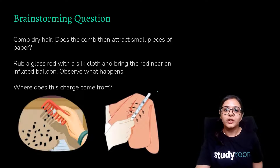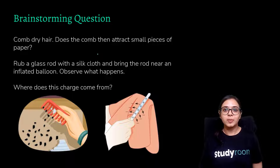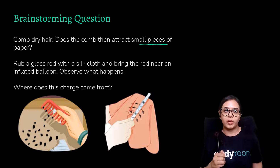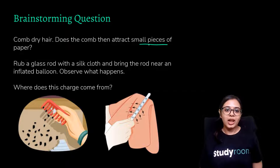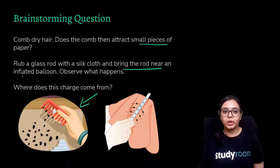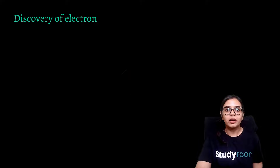Here is a brainstorming activity: comb dry hair — does the comb then attract small particles of paper? Also, rub a glass rod with a silk cloth and bring the rod near an inflated balloon. Observe what happens. While combing your hair, take some small pieces of paper, and after combing bring the comb close — you will observe that the comb attracts those small pieces of paper. Similarly, when you rub a glass rod with a silk cloth and bring it near an inflated balloon, something interesting will happen. In this chapter we will learn why this happens.